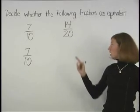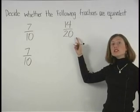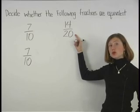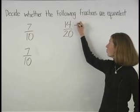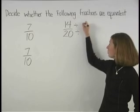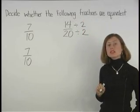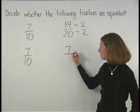For our second fraction, however, since the greatest common factor of 14 and 20 is 2, we must divide both the numerator and the denominator by 2 to write our fraction in lowest terms. This gives us 7 tenths.